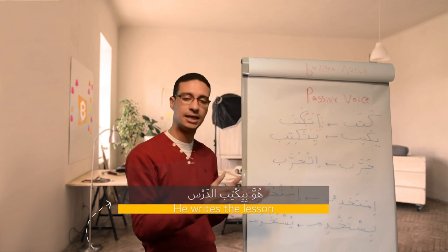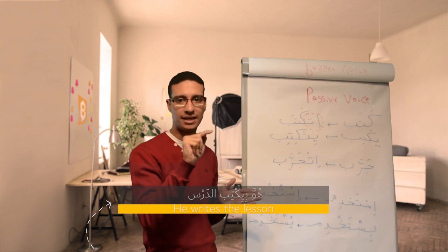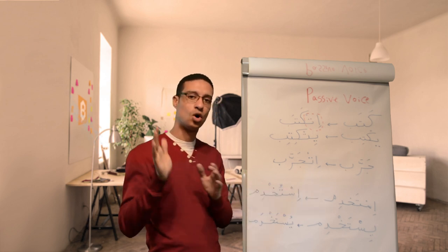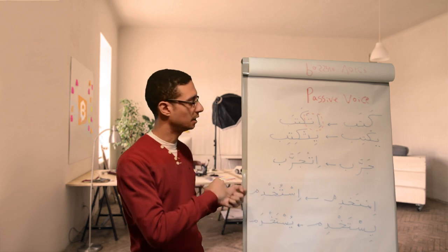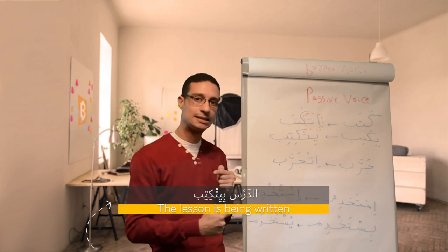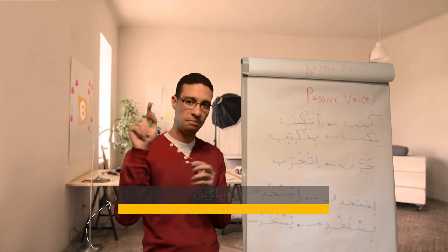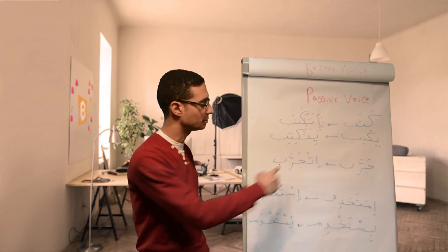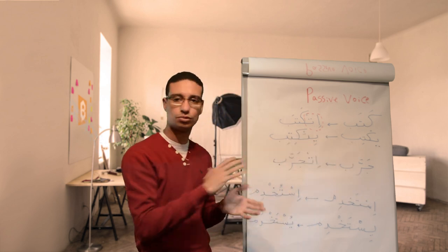Huwa bi-yiktib it-dars, huwa yiktib it-dars. Of course, we add the be, if you remember. So huwa bi-yiktib it-dars, the passive voice is it-dars bi-yit-katab. Bi-yit-katab. So yit-katab. And the be will be added to both of them.